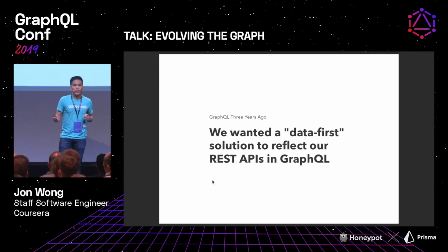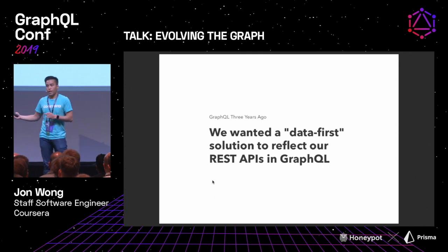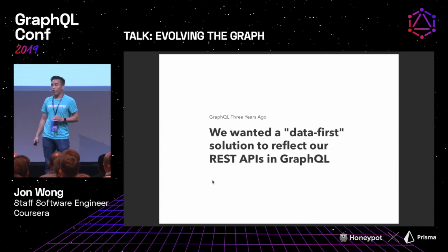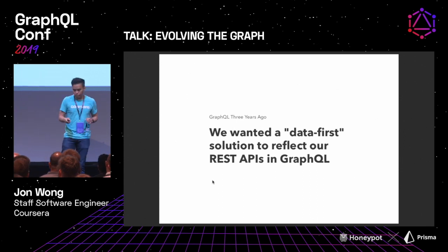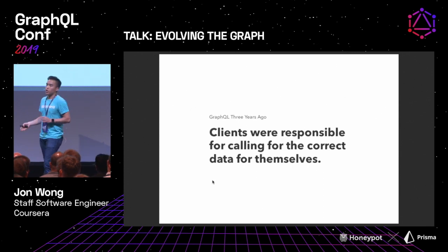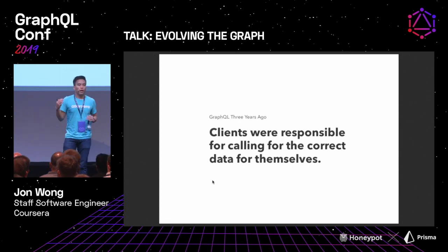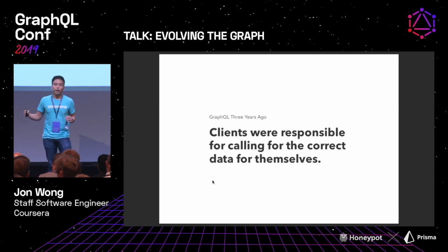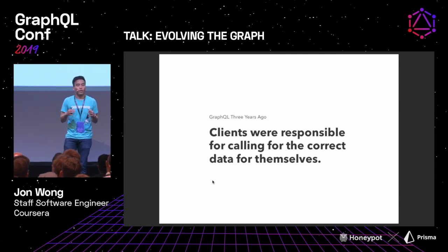Think of it like: I have an existing REST API, and we're going to go ahead and just port that entirety to our GraphQL thing without really thinking too much about the GraphQL part of it. The second thing we wanted was for clients to be able to take all that data and construct it themselves. We had mobile apps — iOS, Android, and web — and we wanted them to deal with the stitching work.